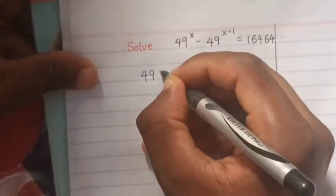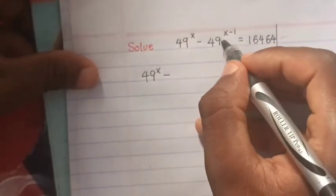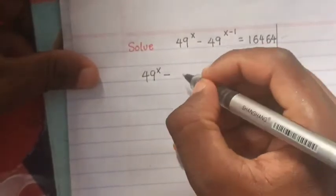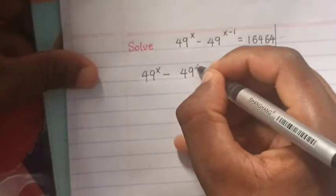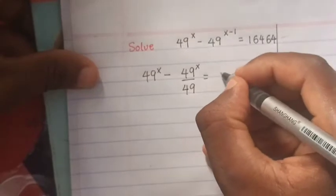This is the same as 49^x minus 49^(x-1), which is the same as 49^x over 49, equals 16464.